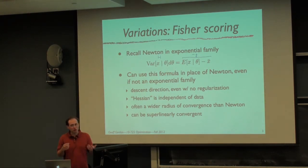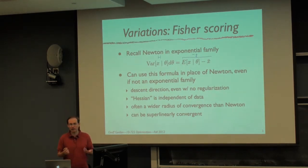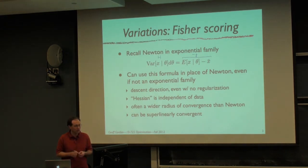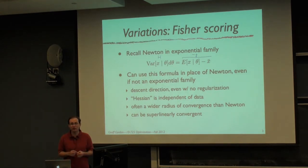There's folk wisdom that Fischer scoring might have a wider radius of convergence than the true Newton method. I don't know of a proof of that, but I've tried it in some experiments and that seems to be true. It can be super-linearly convergent, meaning it's still a very fast method for optimizing.